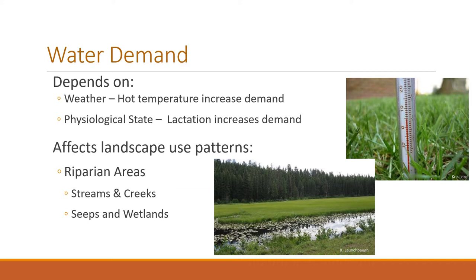Physiological state is also really important, especially for lactating mother animals — cows, sheep, goats. If they're lactating, they have a much higher water demand than non-lactating or dry animals. Water is also important as a habitat feature not only from the amount animals need, but also from how it affects animal use of the landscape. Riparian areas such as streams and creeks can be magnets of use especially in hot times. Seeps, wetlands, and lentic water systems can also be very important to meet water demand and as magnets for animal use at certain times of year.